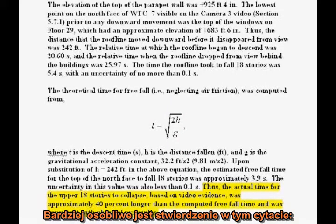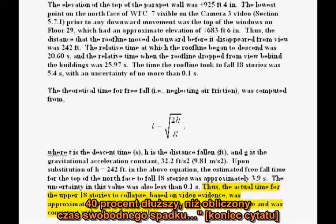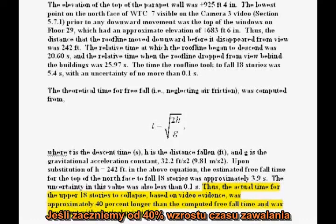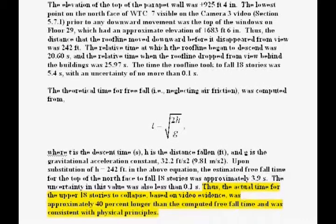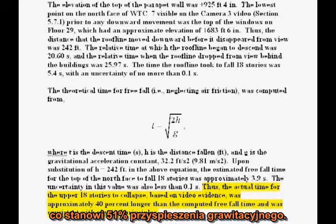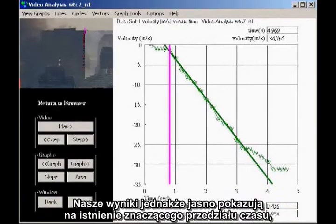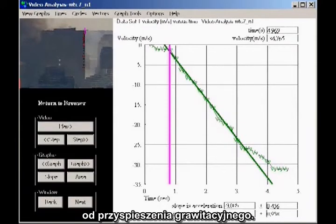More bizarre is the claim that, quote, the actual time for the upper 18 stories to collapse, based on video evidence, was approximately 40% longer than the computed freefall time. If you start with a 40% increase in the time of fall and work backwards to compute the effect on acceleration, their claim is equivalent to saying the acceleration of the building is only 5 meters per second squared, which is 51% of the acceleration of gravity. Our results, however, clearly show a significant stretch of time in which the acceleration of the building is indistinguishable from the acceleration of gravity itself — complete freefall.